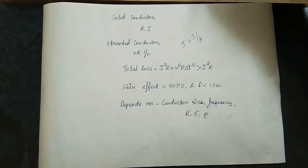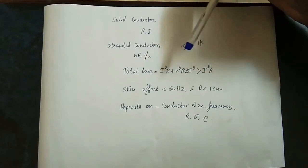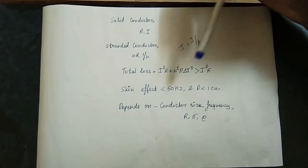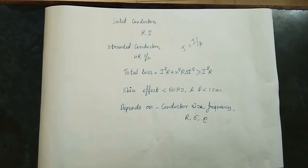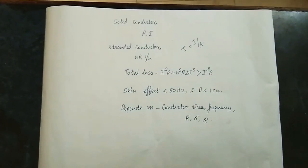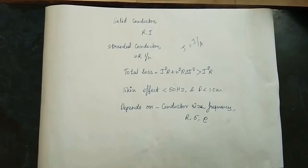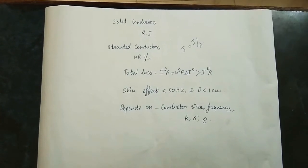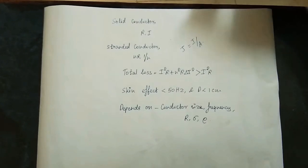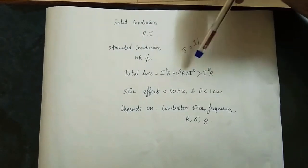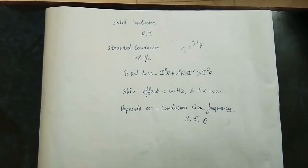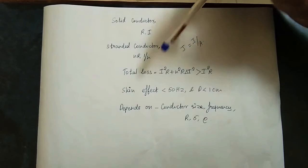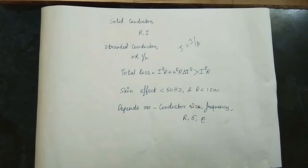The total loss formula is I²R plus n²R times delta I². This is the formula. Normal power loss is I²R. This is n²R and delta I — delta I is a variation, a change in current. So positive and negative delta I. The total loss is greater than I²R. So normal power loss equals this equation. So the loss is equal to the skin effect.